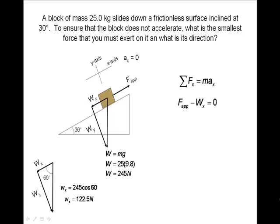We substitute in our values, and because it is 0, we can also eliminate the acceleration from the equation. We can now see the magnitude of the applied force is equal to the x component of the weight. After substituting in our values, we find that we have to apply a force of 122.5 newtons up the inclined plane to stop the mass from moving.